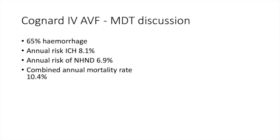Given that there is an ectatic vein and direct feeding into a vein, this would be a grade 4 lesion with quite a high risk of overall hemorrhage — an annual risk of 8.1% with a combined annual mortality rate of 10.4%.